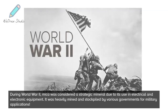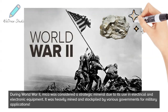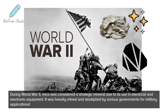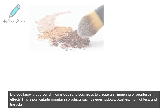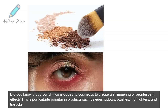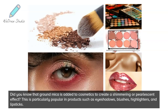During World War II, mica was considered a strategic mineral due to its use in electrical and electronic equipment. It was heavily mined and stockpiled by various governments for military applications. Did you know that ground mica is added to cosmetics to create a shimmering or pearlescent effect? This is particularly popular in products such as eyeshadows, blushes, highlighters, and lipsticks.